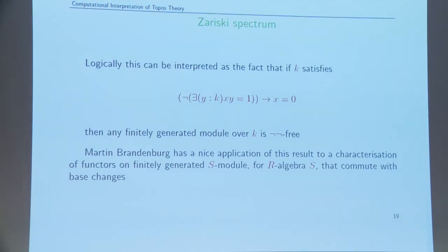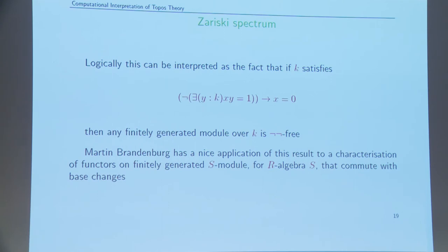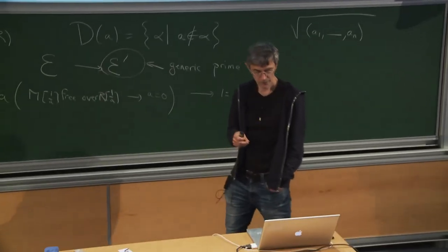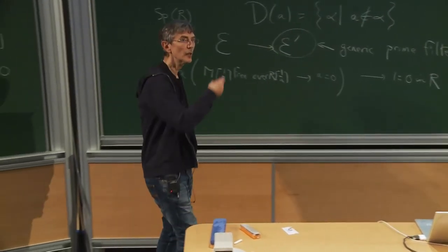The intuitionistically valid formulation looks like this: if you take a reduced ring R and suppose that whenever the localization of M at a is free over the localization of R, then a = 0 — under this assumption the ring is trivial. The proof is trivial, by induction on the number of generators of the module. Intuitionistically, if a ring K satisfies these implications, you can show that any finitely generated module over K is not-not-free — if you suppose it is not free, you have a contradiction. That's an application of the internal logic of a topos. My conjecture is that there are many statements in commutative algebra with extra noetherianity hypotheses that can be treated in this way.